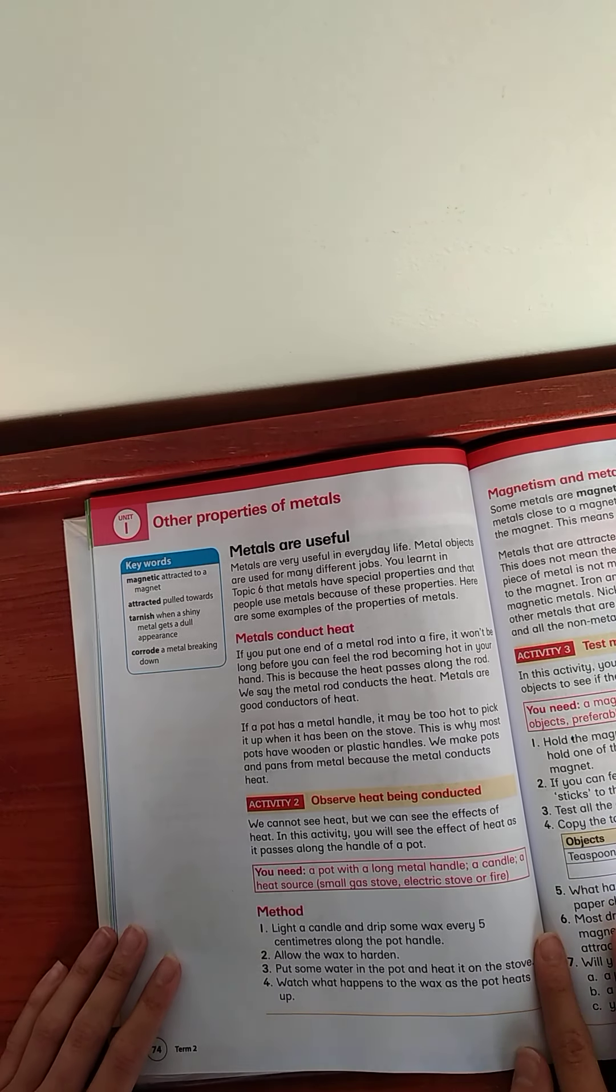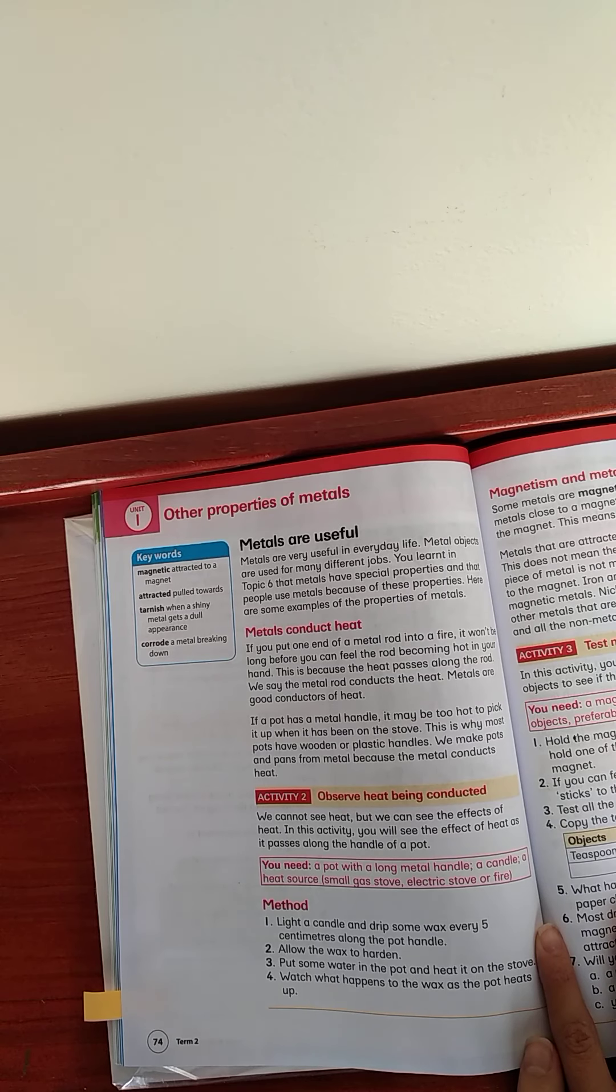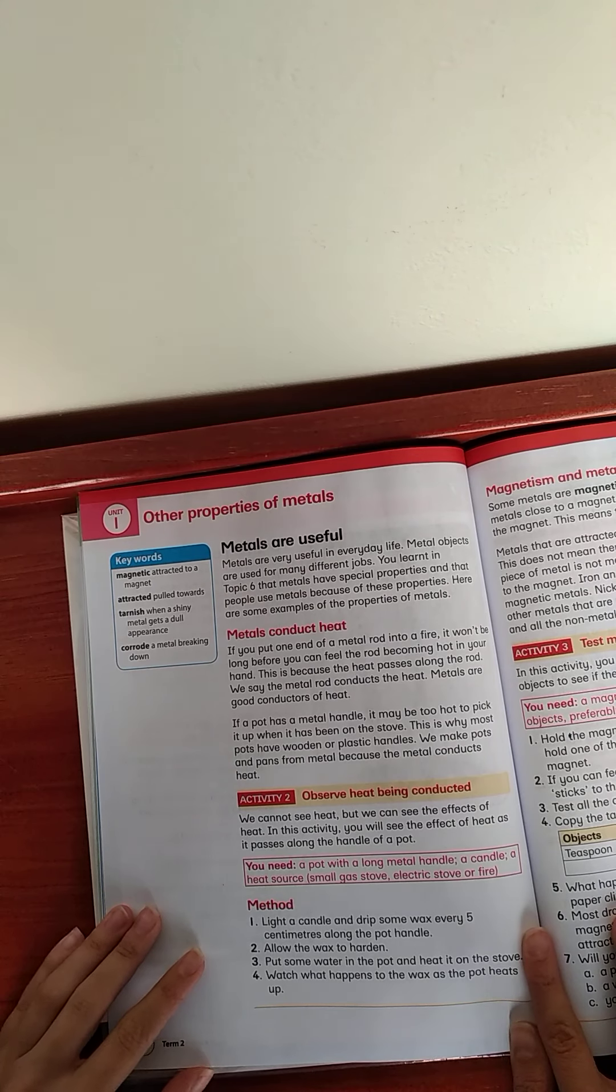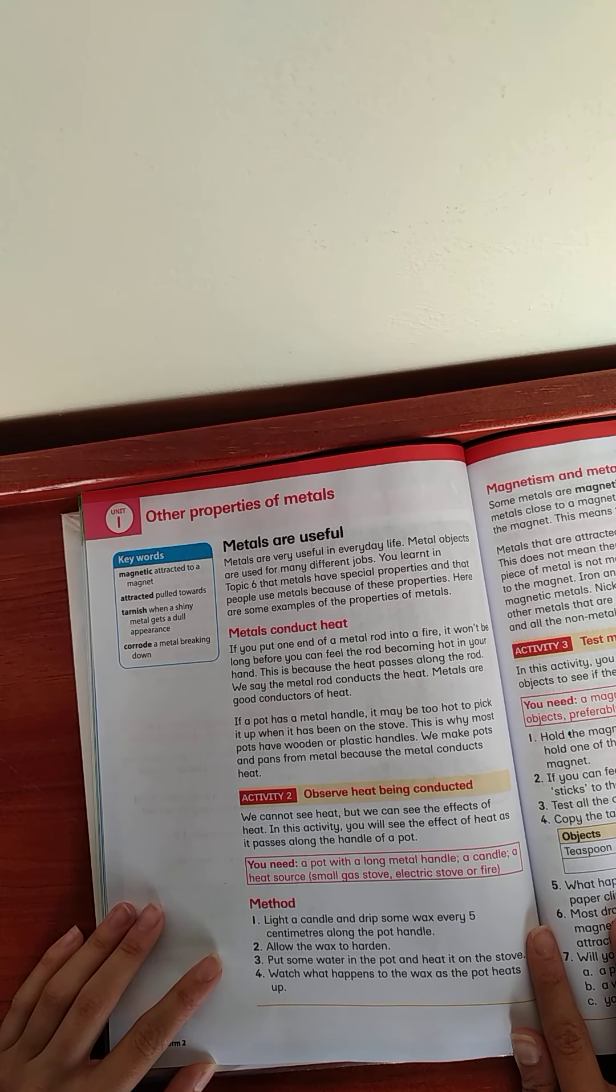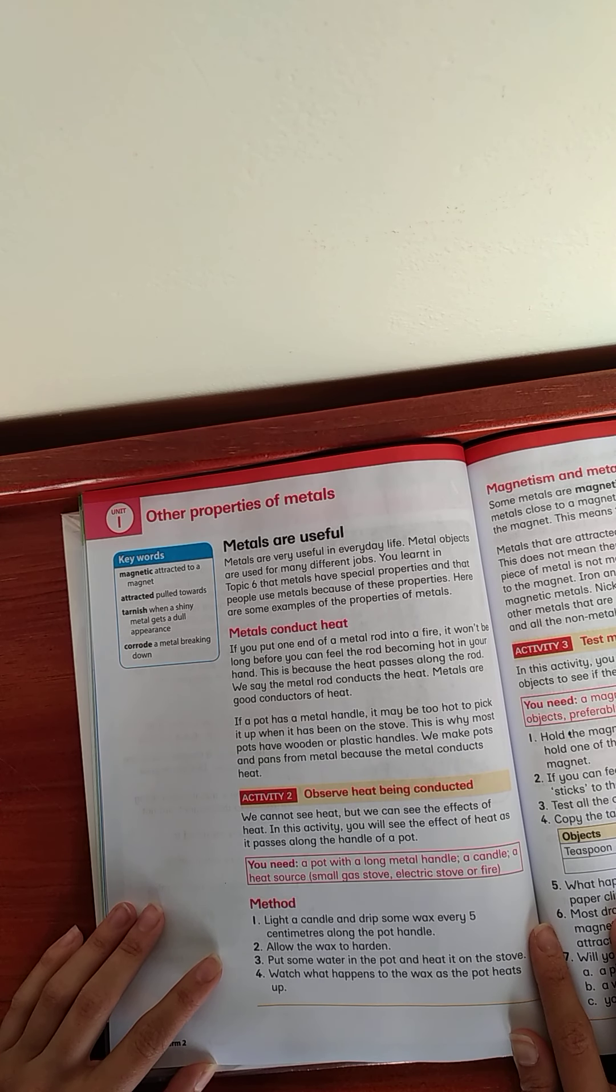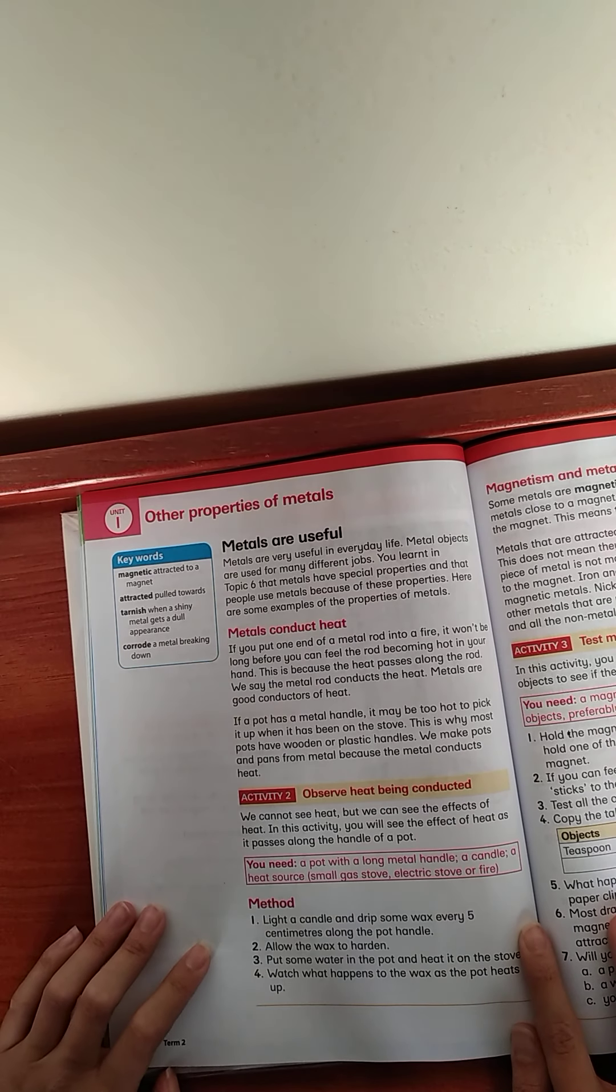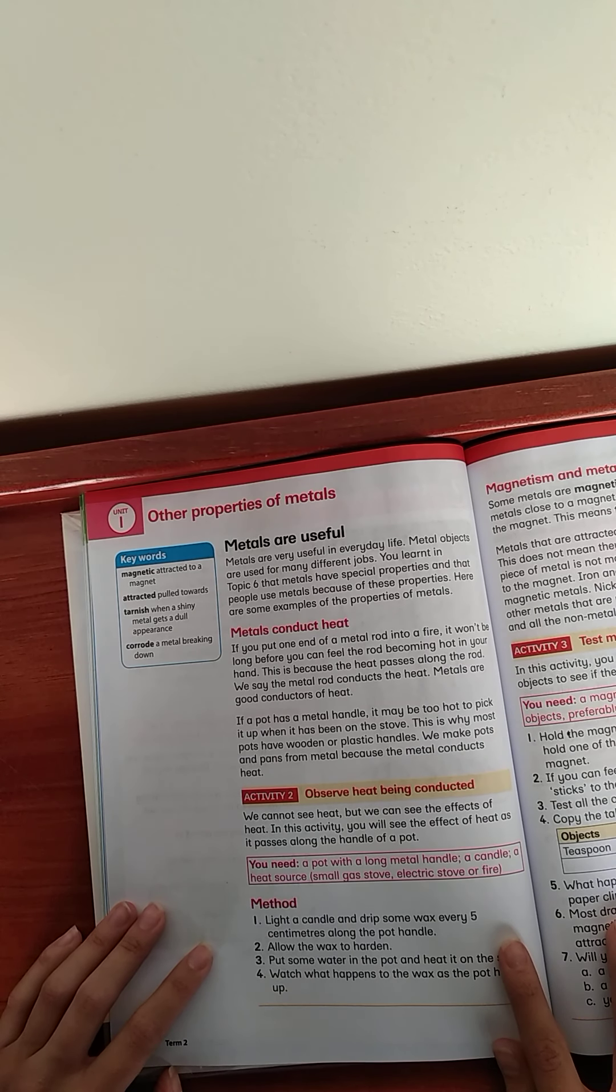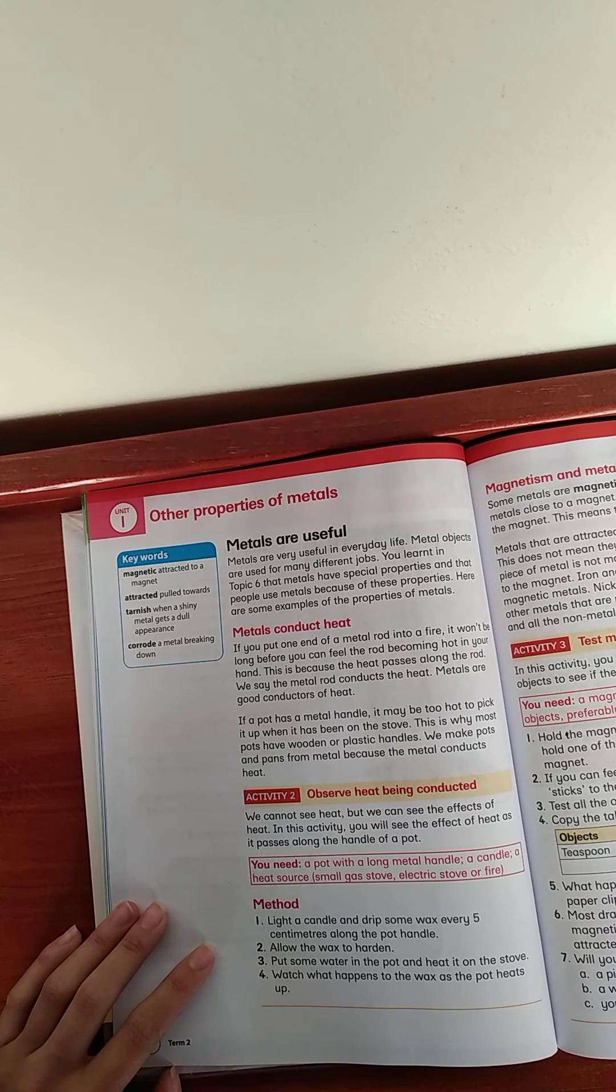Now you need to do activity two as well. Observe heat being conducted. We cannot see heat, but we can see the effect of heat. In this activity, you will need to see the effect of heat as it passes along the handle of a pot. So I want you to try and do this activity. It's basically just a viewing activity to see, it's like a little experiment to see how heat is conducted. If you don't have some of these things, ask your mom just to basically, when she cooks, have you there with her and sort of see the heat, the water boiling or whatever she's boiling in a pot to see how the heat is conducted through the metal.